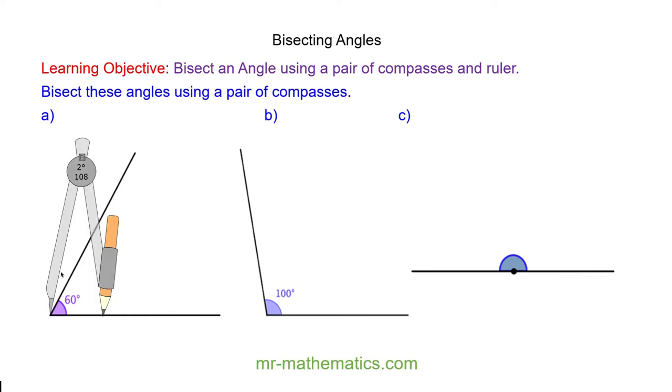I move the compasses so the pin is on the point that creates the two angles and I draw an arc that crosses through the two lines.